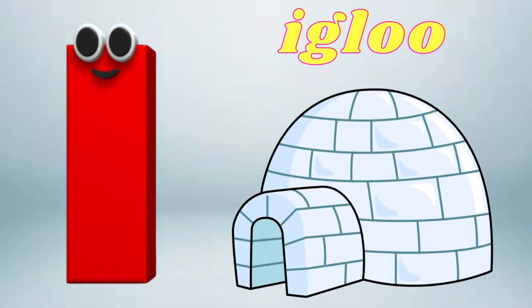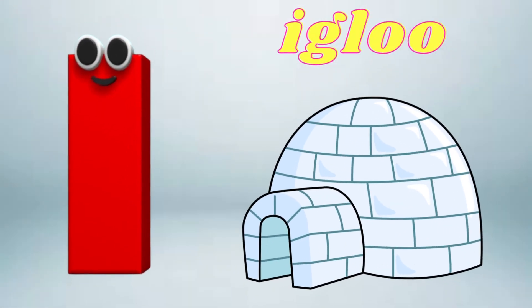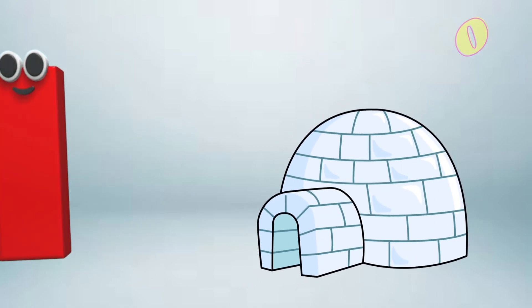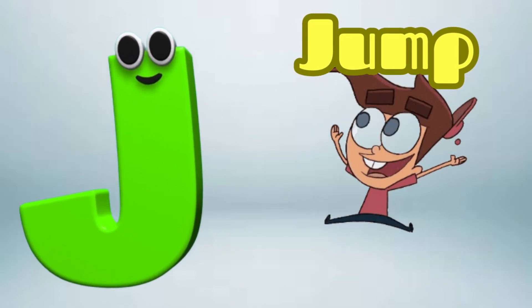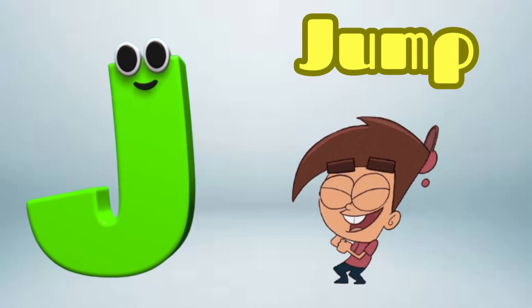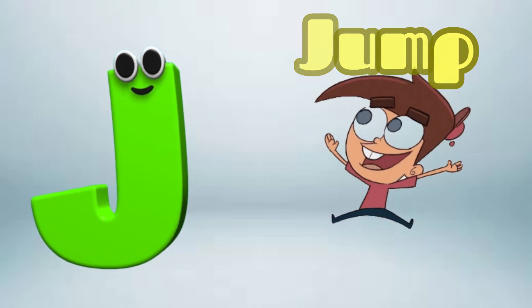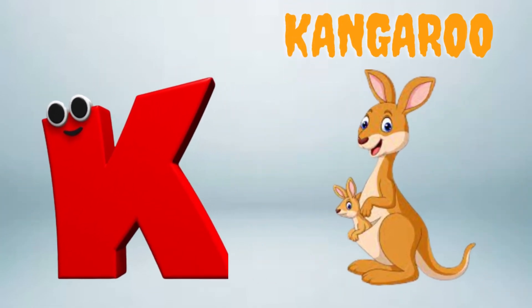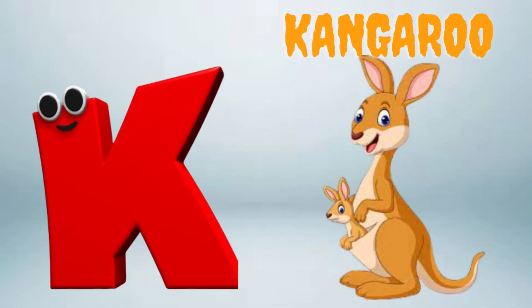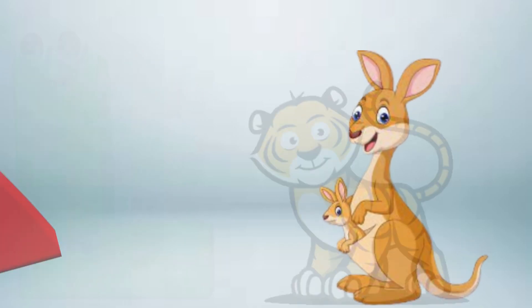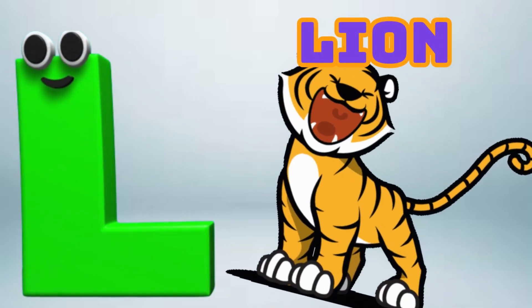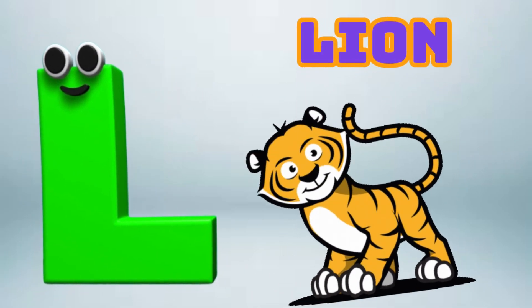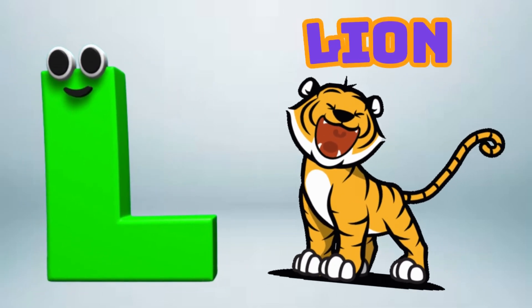I is for Igloo, I-I-Igloo. J is for Jump, J-J-Jump. K is for Kangaroo, K-K-Kangaroo. L is for Lion, L-L-Lion.